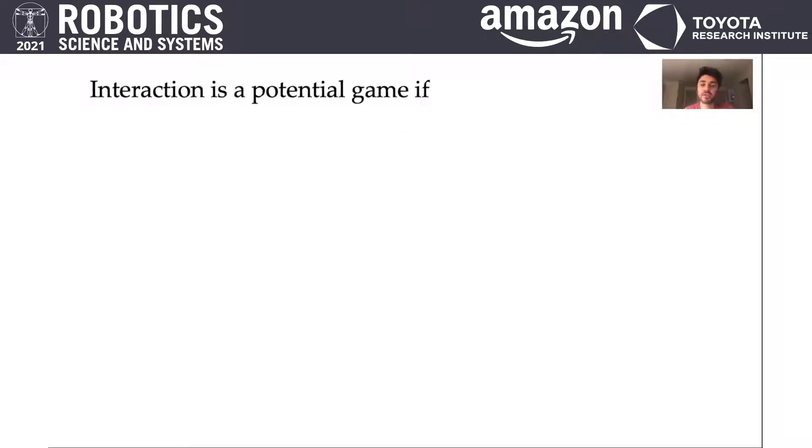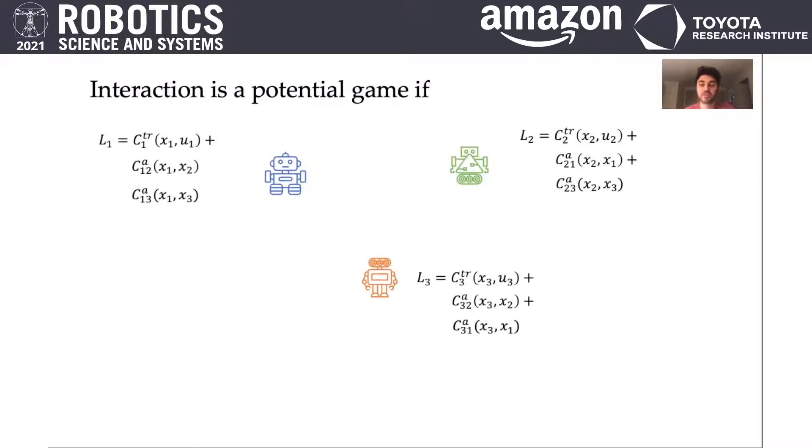Now we will see how the potential game formulation can be used in a multi-agent interactive setting. For instance, let's say we have three agents, each of which has its own cost function that consists of tracking costs that penalizes deviations from reference trajectory and pairwise collision avoidance costs that penalize proximity between agent pairs. Our key insight is that if pairwise collision avoidance costs between the agents are symmetric, then the interaction is a potential game.